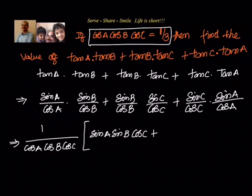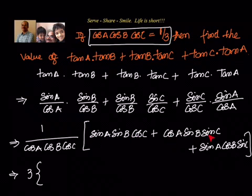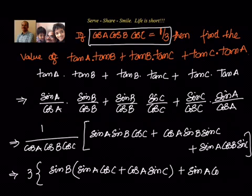Similarly, the next term gives cos A sin B sin C in the numerator. Continuing, the third term gives sin A cos B sin C. Can I take sin B common in that? So we write sin B into sin A cos C plus cos A sin C, plus sin A cos B sin C. Can you see some formula there?